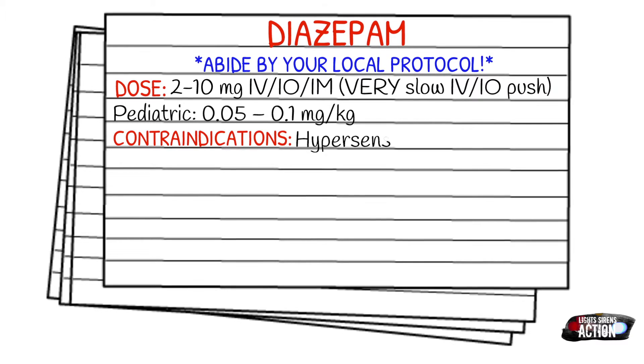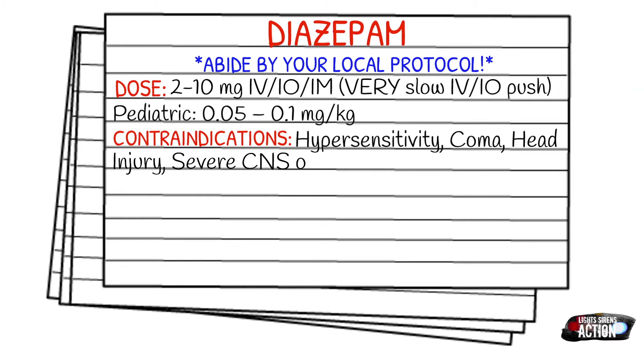Your contraindications of Valium are going to be hypersensitivity, coma, head injury, severe central nervous system or respiratory depression.